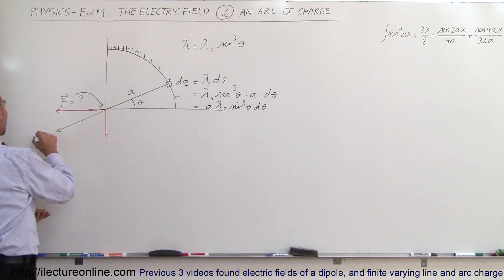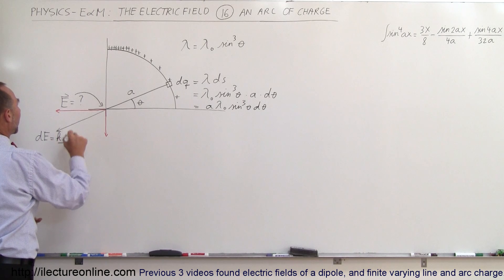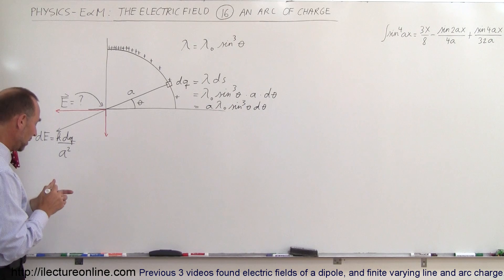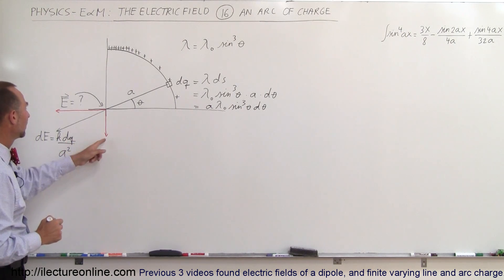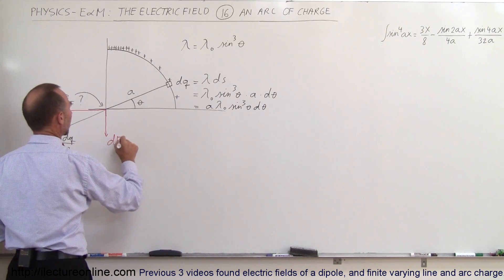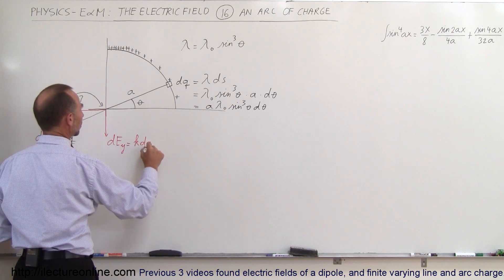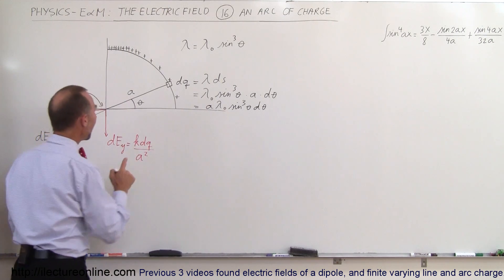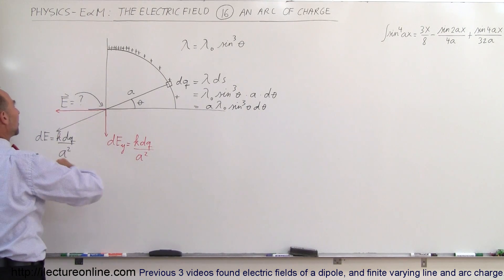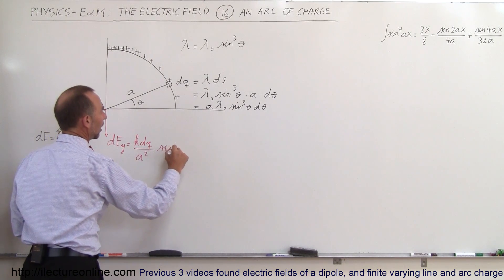So dE is going to be equal to k times dq divided by a squared, where the radius is the fixed quantity a. The dE in the y direction is going to be equal to k·dq divided by a squared times the sine of theta, because this vector is opposite the angle theta.